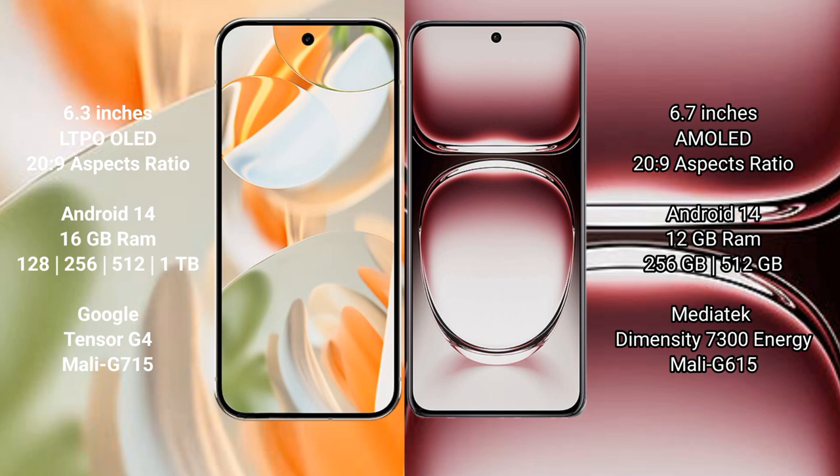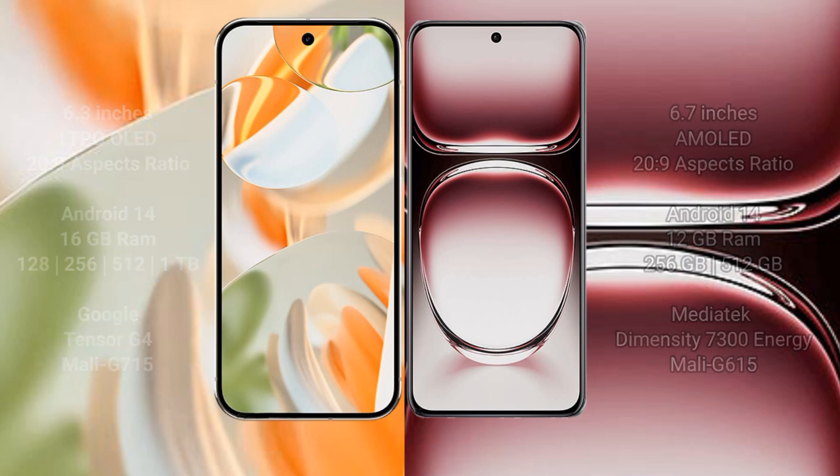The Google Pixel 9 Pro comes with 16GB RAM and 128GB, 256GB, 512GB, or 1TB internal storage options, powered by the Google Tensor G4 processor with Mali-G715 GPU. The Oppo Reno 12 Pro comes with 12GB RAM and 256GB or 512GB internal storage, powered by the MediaTek Dimensity 7300 processor with Mali-G615 GPU.